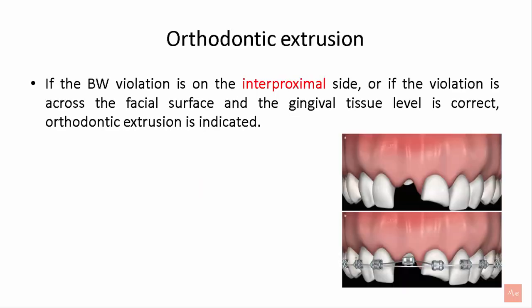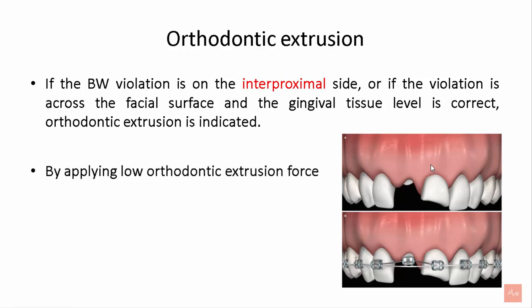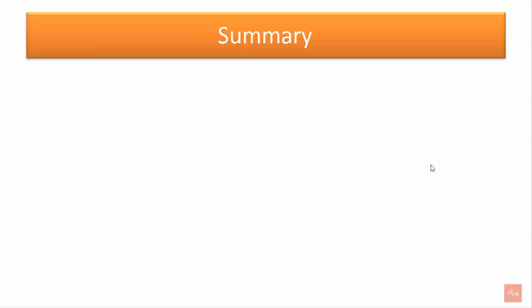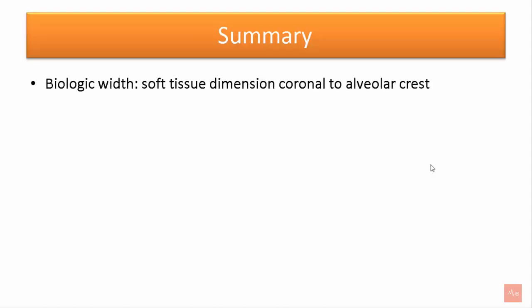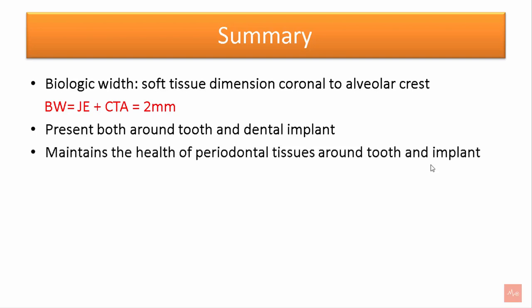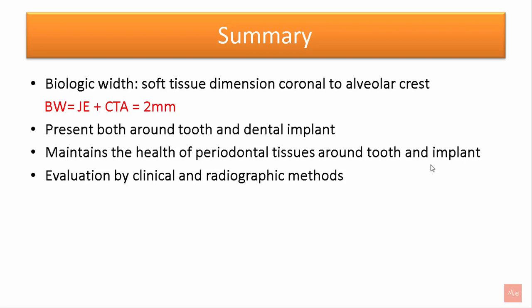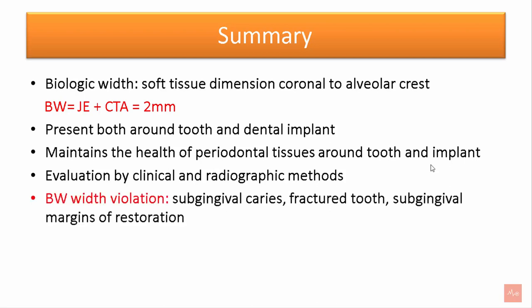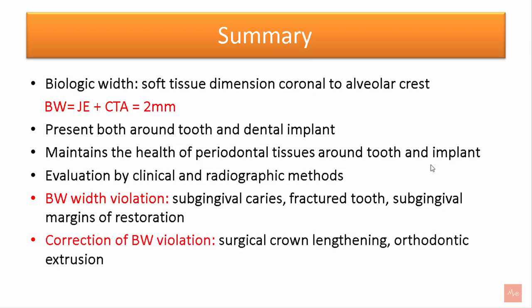Orthodontic extrusion is indicated when biological width violation is on the interproximal side or across the facial surface with correct gingival tissue levels. It can be performed using low or rapid orthodontic forces. To summarize: biological width is the soft tissue dimension coronal to the alveolar bone crest, comprising junctional epithelium and connective tissue attachment, clinically measuring 2 mm. It exists around both teeth and implants, maintains periodontal health, and can be evaluated clinically and radiographically. Violation occurs with subgingival caries, fractured teeth, or subgingival restoration margins, and can be corrected by surgical crown lengthening or orthodontic extrusion.